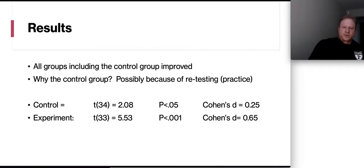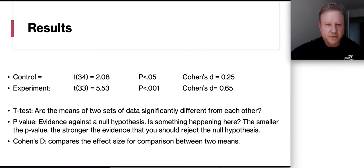But now let's really dig into those results. All the groups, including the control group improved. Now, why the control group? They think it was just practice that they kept taking the same test over and they just got better at it. So if you take a look at the control group, we have our t-test, our p-test, and our Cohen's D. But let's just do a little bit of a refresher on what those mean.